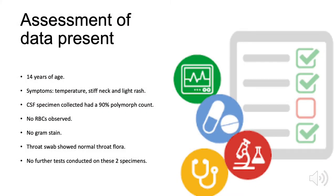Our patient is a 14-year-old female with typical symptoms of Neisseria meningitidis such as temperature, stiff neck, and light rash. Increased body temperature could be because Neisseria meningitidis requires a humid environment to grow in. A cerebrospinal fluid specimen was collected because Neisseria meningitidis travels to the brain and replicates within it. Light turbidity was observed from the specimen. A white blood cell count of 280 × 10⁶ per litre with 90% polymorphs was observed. No red blood cells were examined.